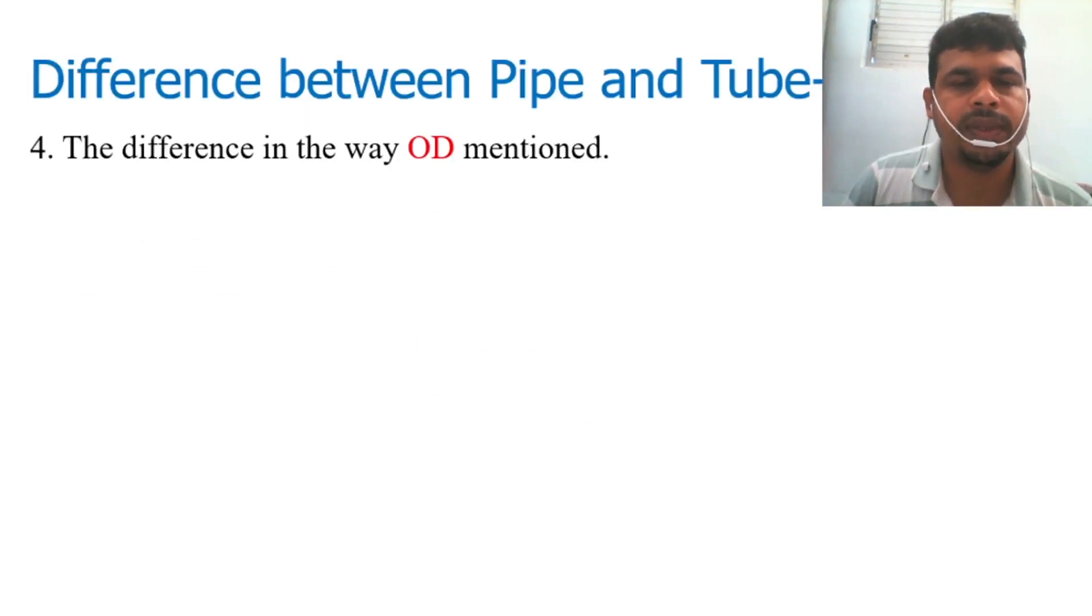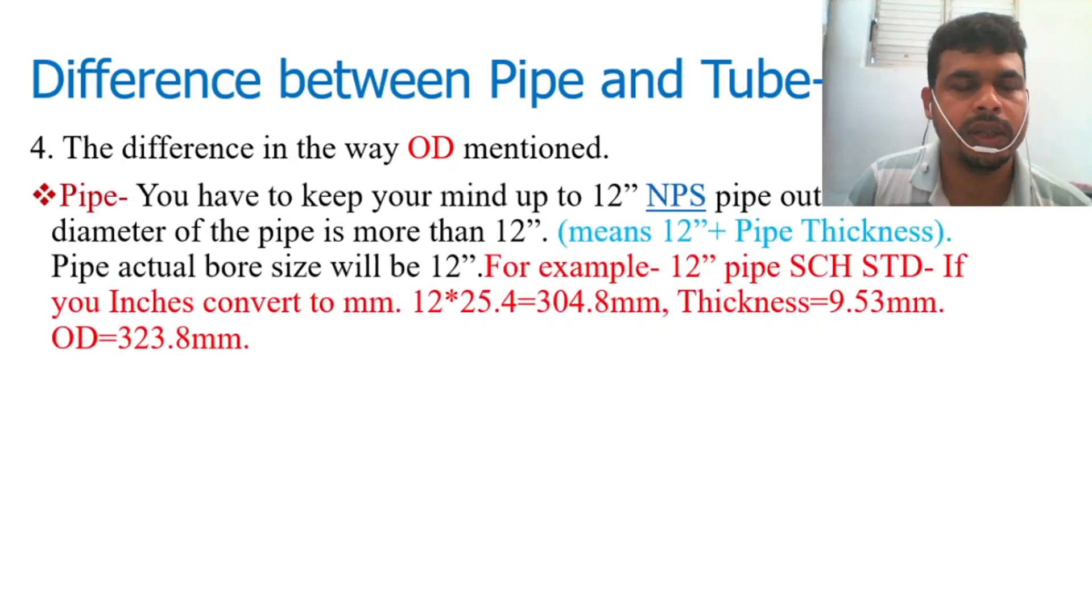Fourth, the difference in the way OD is mentioned. The mention of pipe and tube OD is a significant difference. So let's see what is the different dimension.